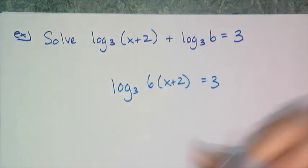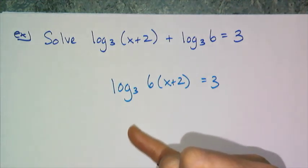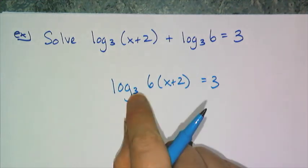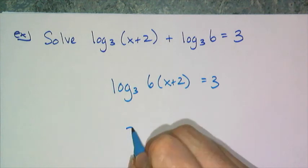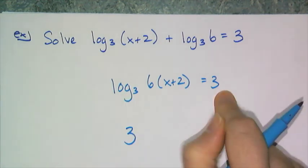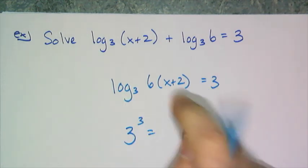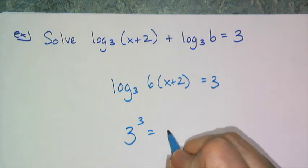And now I have to get rid of the log. So I'm going to rewrite this as an exponent. Remember, this is the base of my exponent. The log gives me the actual exponent. And this is what it is equal to.